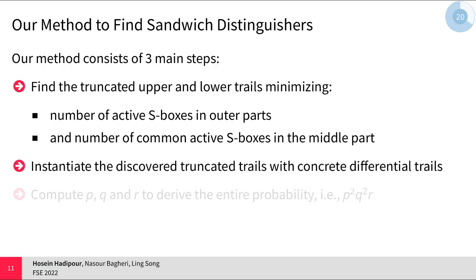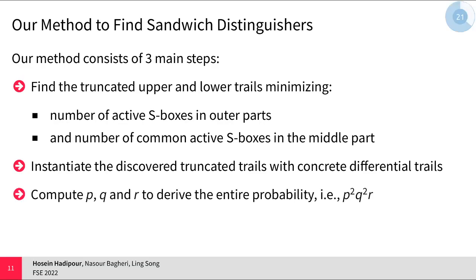The second step of our method is instantiating the discovered truncated trails with concrete differential trails. And finally, when we have concrete differential trails in hand, we can compute p, q, and r and put them together in the p squared q squared r formula to also compute the overall probability of the sandwich distinguisher.